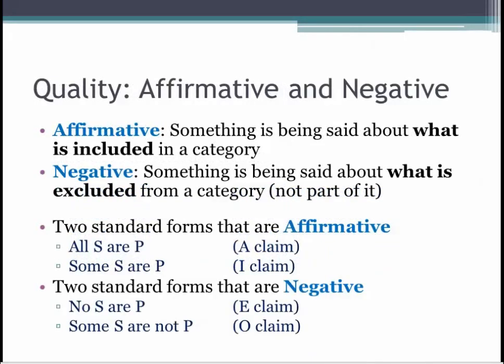Standard propositions are one of two qualities: affirmative or negative. A proposition is affirmative when it says what is included in a category. All S are P says that all of the S kinds of things are also included in the P kind of things. A proposition is negative when it says what is excluded from a category. No S are P says that the S's are excluded from the P category. All S are P and some S are P are the affirmative standard propositions. No S are P and some S are not P are the negative standard propositions. Using the abbreviations, A and I claims are affirmative and E and O claims are negative.